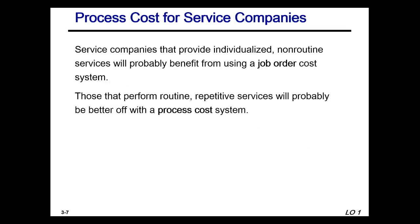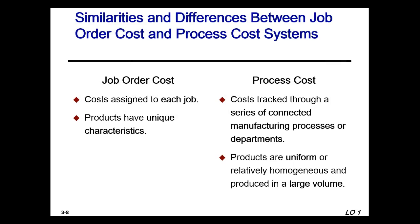It's D — the products in a process cost system are homogeneous in nature. Service companies that provide very specific non-routine services are going to be part of the job order cost system, but those that are routine and repetitive are probably going to utilize the process system.